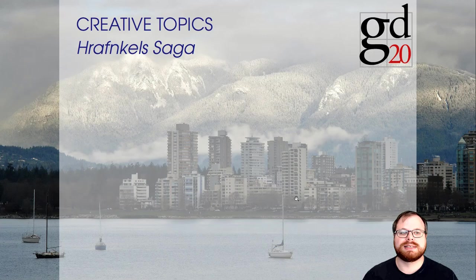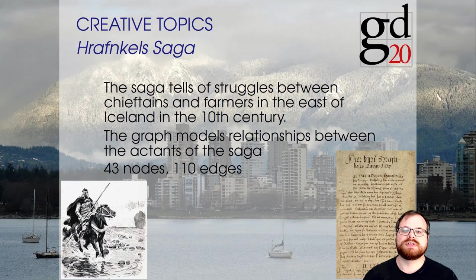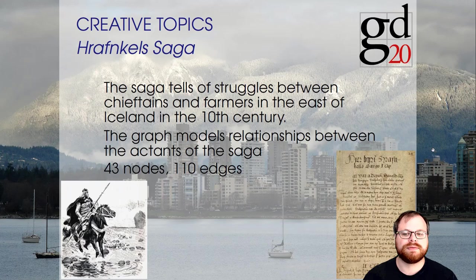Let's start with the results of the first creative topic, Grafenkal Saga. The saga tells of struggles between chieftains and farmers in the east of Iceland in the 10th century, and we wanted you to model all those relationships and acts between the actants of the saga. The graph had 43 nodes and 110 edges — a rather small graph — and we received five submissions.